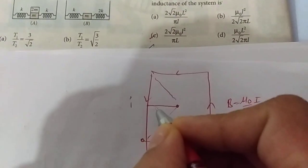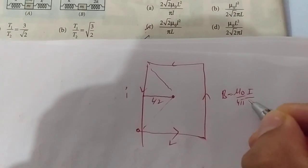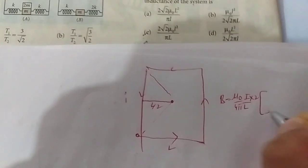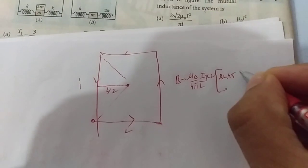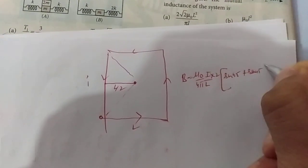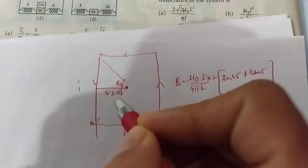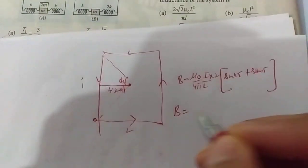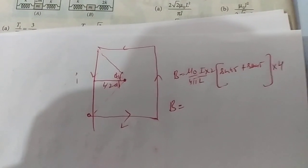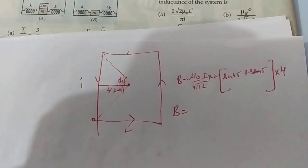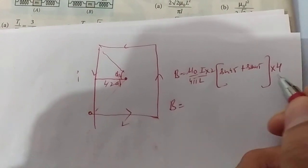This will become L/2 because the side is capital L, so the distance will become L/2. And we multiply sin 45° plus sin 45°, which is standard formula. These are the angles θ₁ and θ₂. In this situation, these are 45, 45. Now there will be four elements here. The magnetic field from all these elements will be in the same direction using the right-hand rule. So I have multiplied by 4.